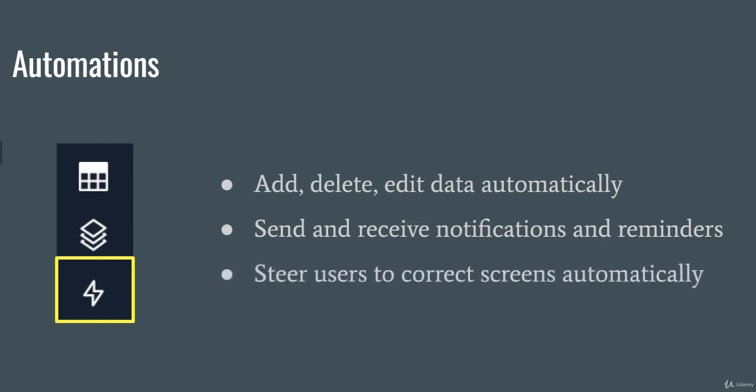Another thing automations can do is steer users to the correct screens automatically. For example, when you click a submit button, instead of staying on that screen, it takes you to a new screen like a history screen or a screen that says 'thank you for submitting this form.' Automating everything allows you to become more efficient and streamline your work.